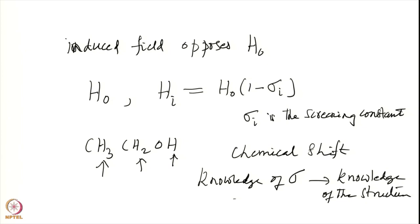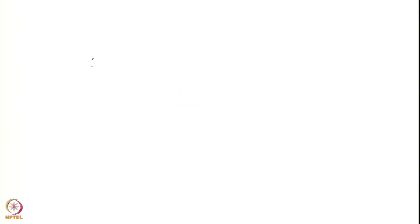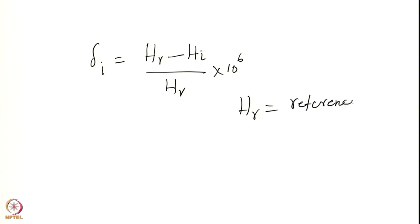In order to achieve this we eliminate the H₀ dependence. We can write δᵢ = (H_R − H_I) / H_R × 10⁶. Here H_R is a reference — you choose a particular reference compound, H_I is your nucleus of interest, and the deviation between these two divided by H_R (the reference field) gives δᵢ, called the chemical shift. The field dependence is gone, and the reference screening constant can be used as a constant.